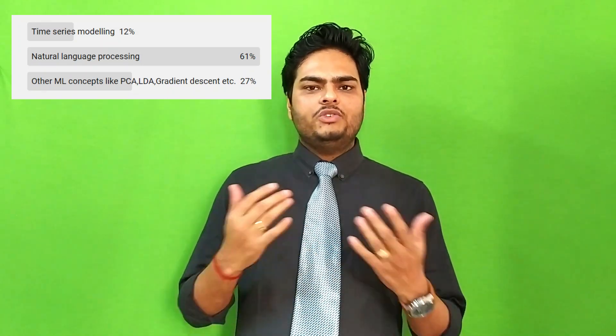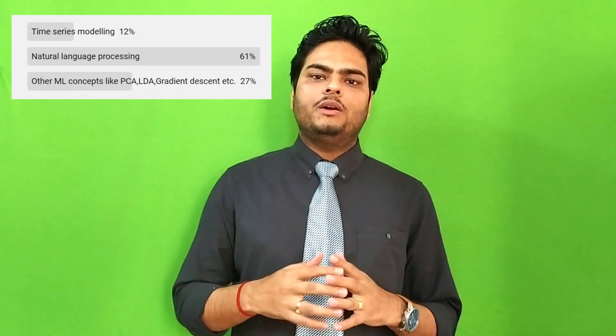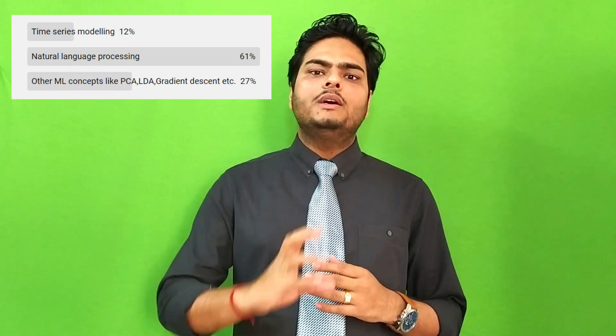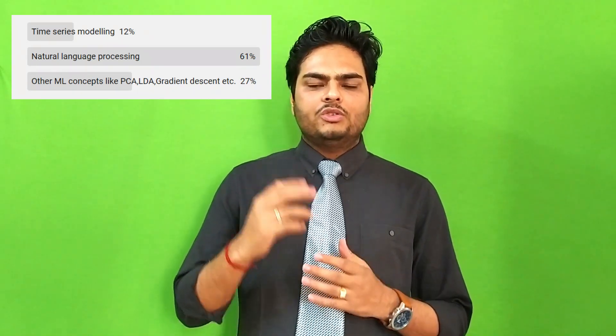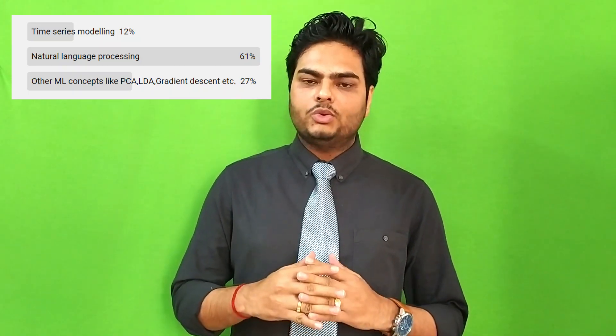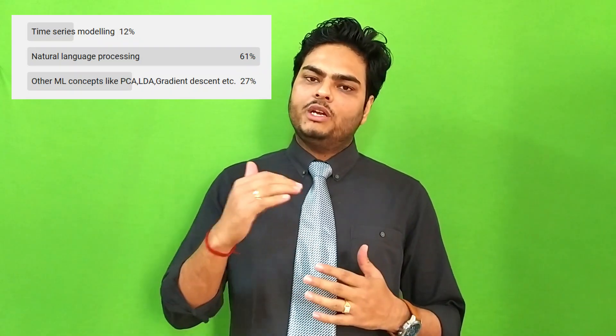As you can see, 60-plus percent of people voted for natural language processing and close to 25% voted for mathematical concepts like PCA, LDA, and those kinds of things. These two are basically very important topics, and I'm happy that people have voted for them.